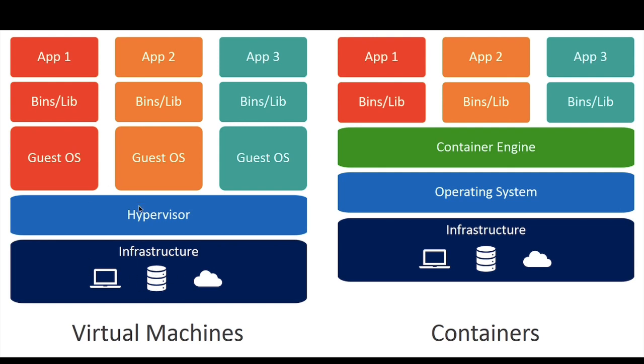In the first layer, we have a hypervisor tool installed on the host machine to run the virtual machines. You can see the red, orange, and green boxes — those are the virtual machines. Inside each virtual machine, we have to run the OS, binaries, libraries, and all of them.